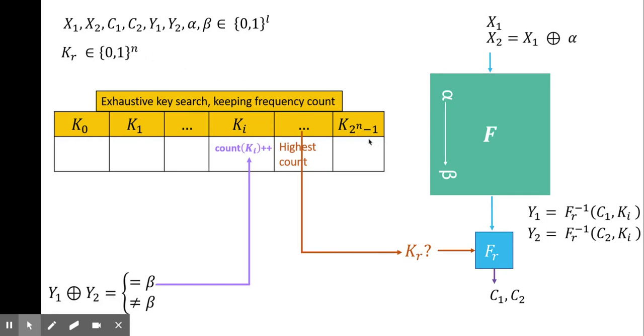We perform an iterative and exhaustive search on Kr. We make a table which will keep the count of each of the possible keys. We select the candidate key Ki. The subscript i is indicative of the decimal representation of the key. So i can be anything from 0 to 2 to the power n minus 1.